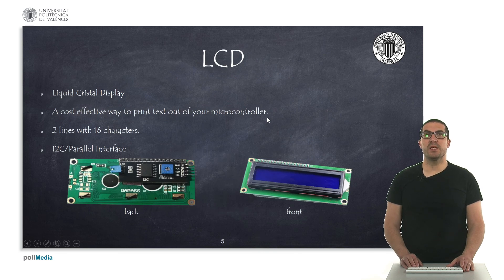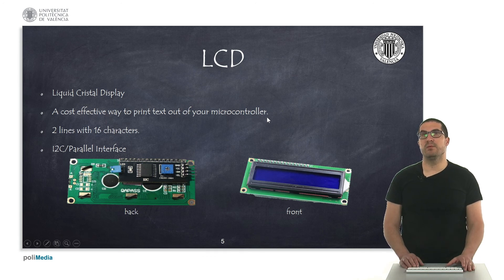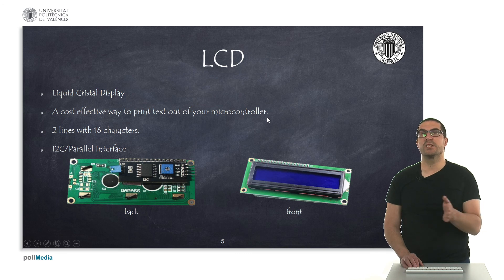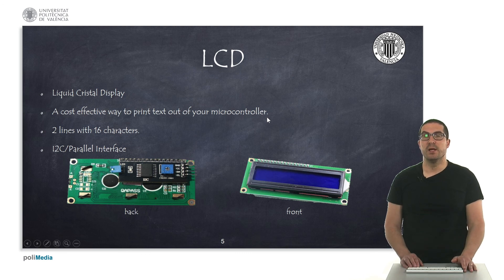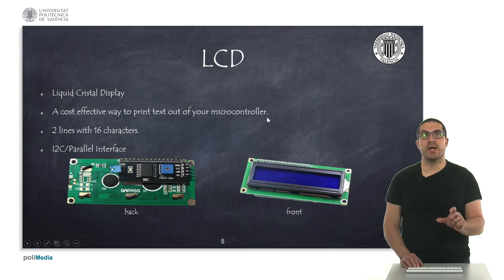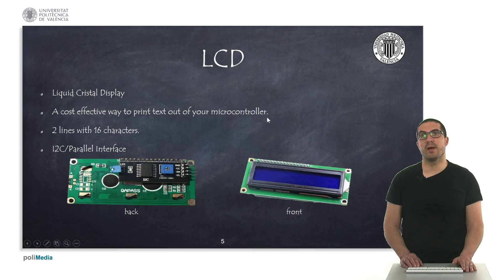Then we have the LCD display — it's a liquid crystal display and a very cost-effective way to print text from our microcontroller. Basically these displays have two lines and are able to print up to 16 characters per line. They have a parallel interface, but there are circuits — as you can see here in the figure — that add an I2C-to-parallel interface so we can save some pins on our microcontroller.